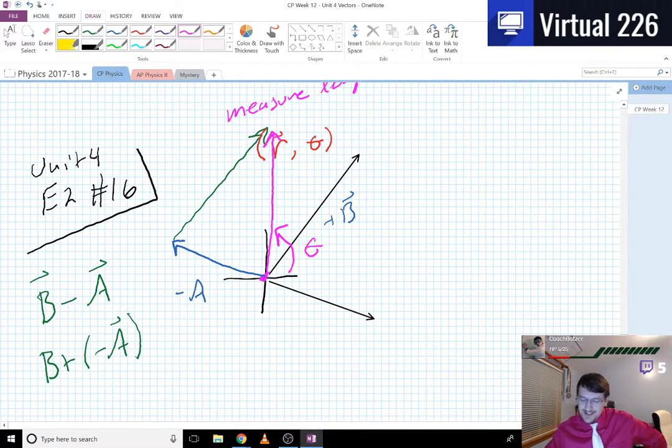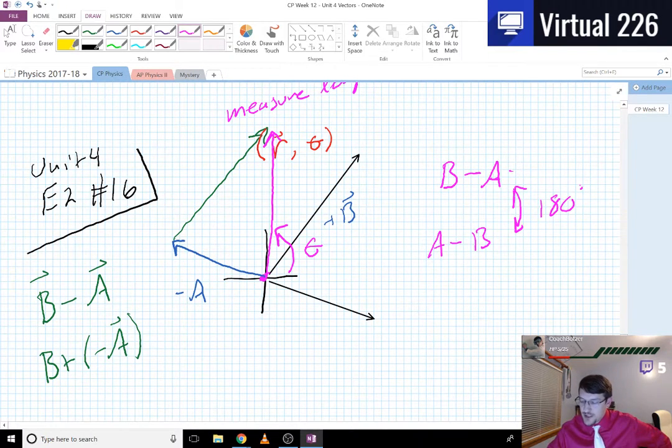...thing about this problem is that this vector here, B minus A, that is actually the opposite of A minus B. The vectors are different by 180 degrees. So if A minus B from before we call that vector D...